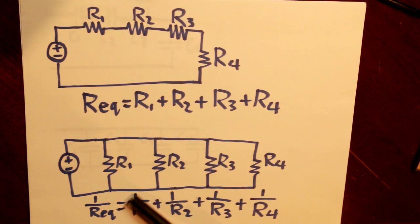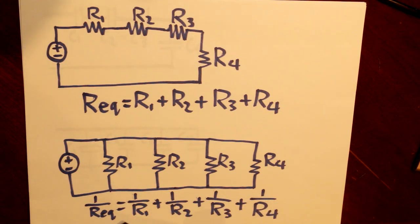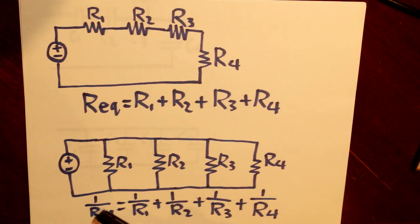When resistors are in parallel, our equation is different — all resistor values appear in the denominator. You add all those terms up, and then you take the inverse of that sum to get our equivalent resistance.